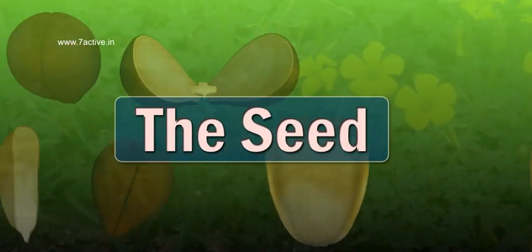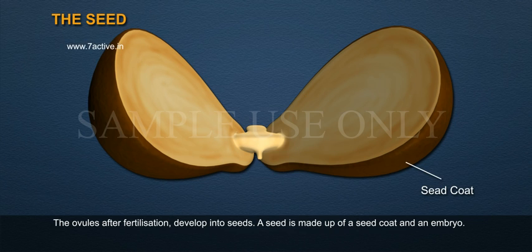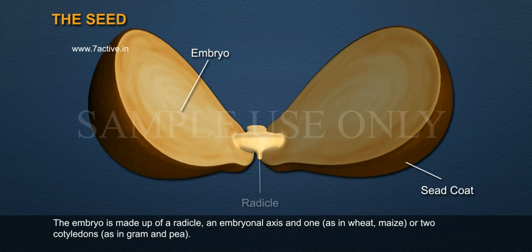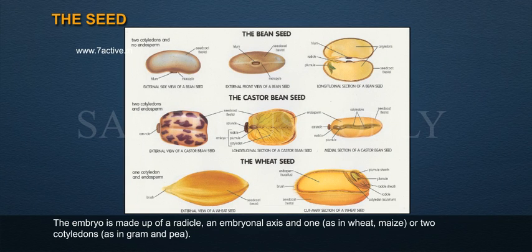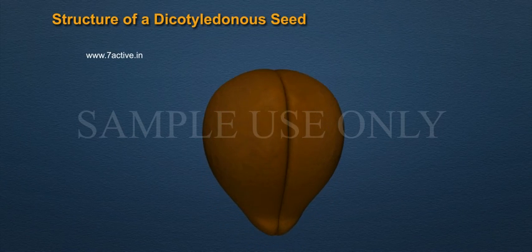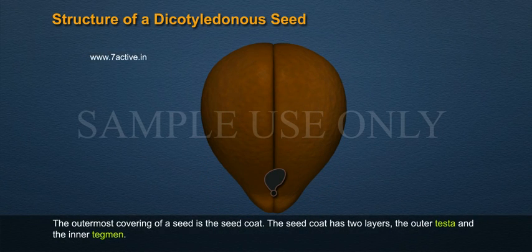The ovules after fertilization develop into seeds. A seed is made up of a seed coat and an embryo. The embryo is made up of a radicle, an embryonal axis, and one cotyledon as in wheat and maize, or two cotyledons as in gram and pea. We will now look at the structure of a dicotyledonous seed.